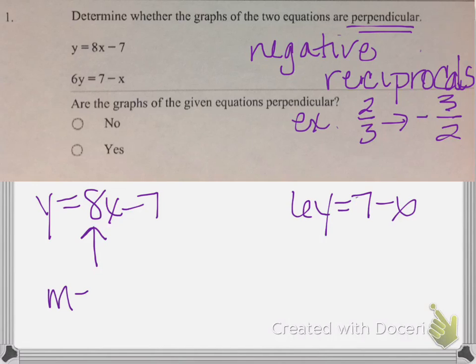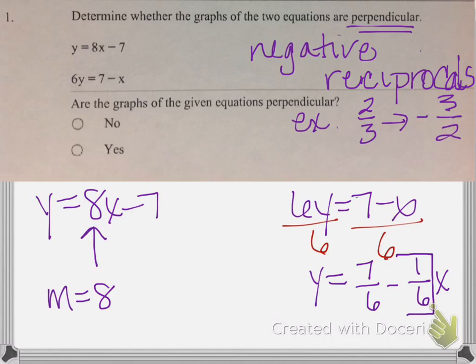So, if this slope is 8, if the slope of the other line is negative 1/8, so negative and flip it, then they're perpendicular, which you can probably already tell it's not going to be, because when I go to solve this, I've got to get y by itself, so it's in slope-intercept form. And I get y equals 7 over 6, minus 1 over 6x. And the slope is always the number in front of the x.